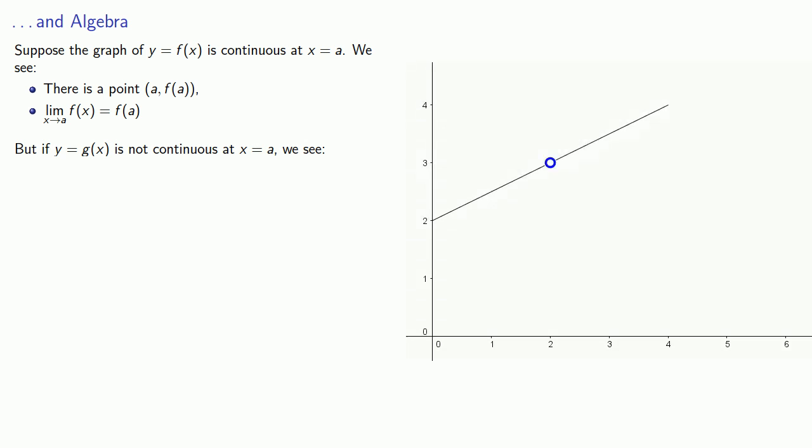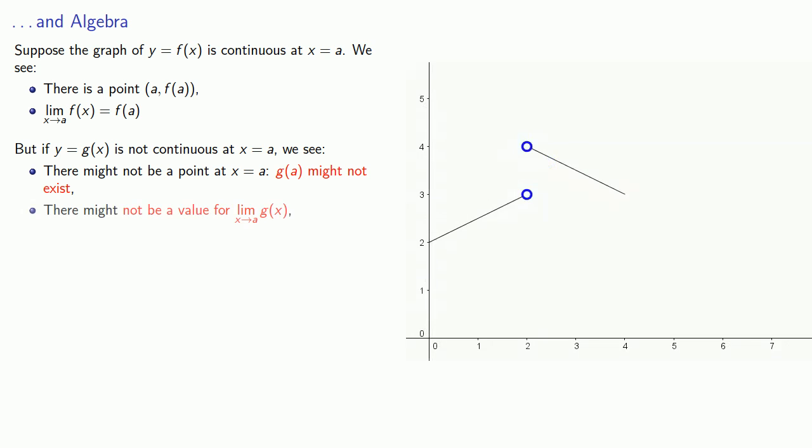First, there might not be a point on the graph at x equals a, g(a) might not exist. Next, there might not be a value for the limit as x approaches a of g(x).